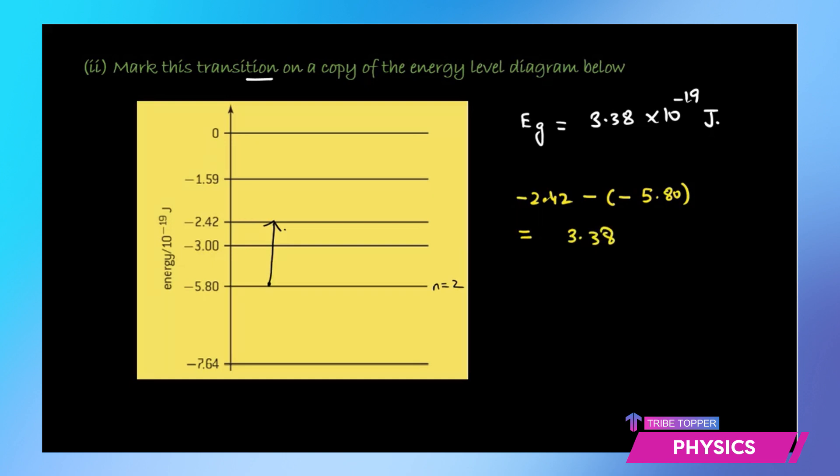It is written here that the order of this energy is 10 raised to the power minus 19. So this means this is equal to 3.38 into 10 raised to the power minus 19 joules. The transition that has happened is from n equals 2 to n equals 4, and you can mark this arrow which indicates a transition by absorption of the corresponding photon.